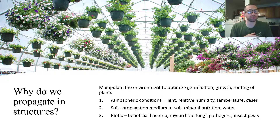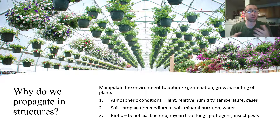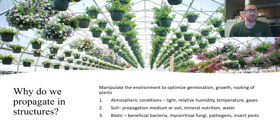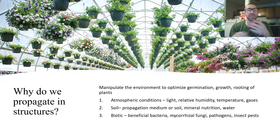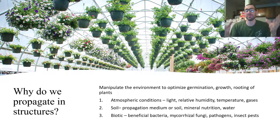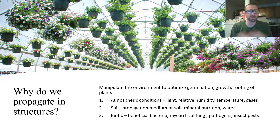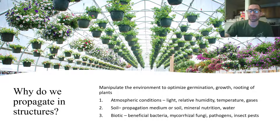We can also introduce biotic factors if we want beyond just adding things to our media. If we're doing some sort of biotic control — maybe we have some insect pests — we could introduce a wasp that will prey upon that insect pest. These are things we could do within a controlled environment. So manipulating the environment is the big reason why we're going to grow inside of a structure.